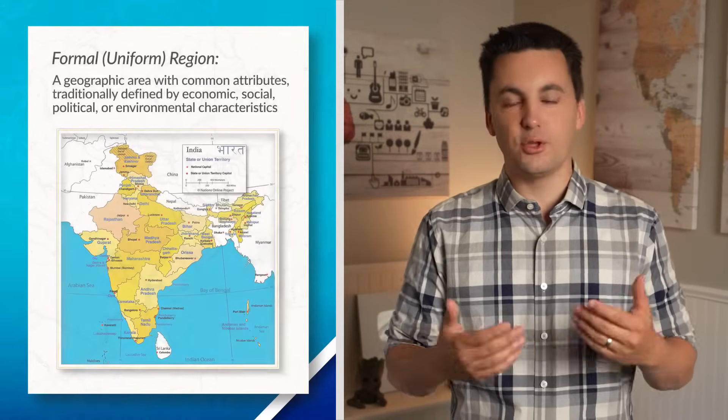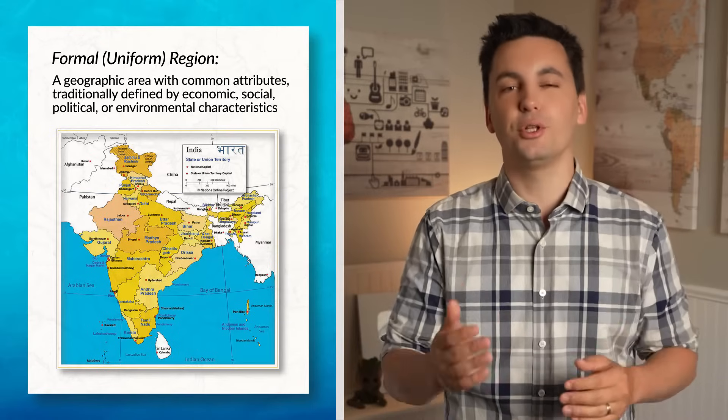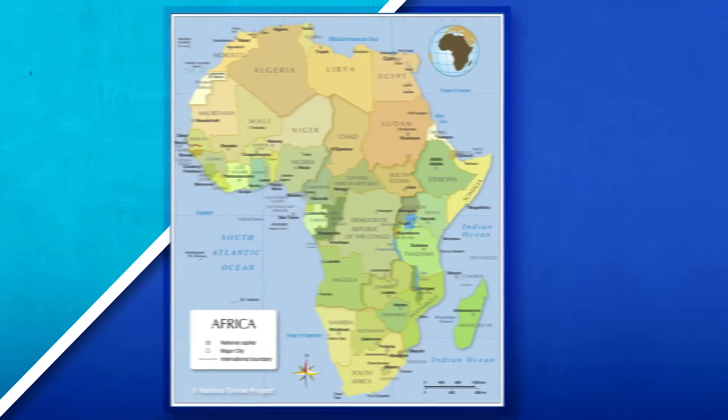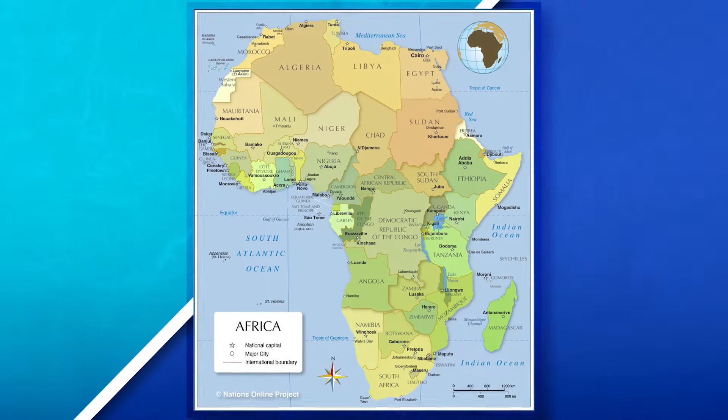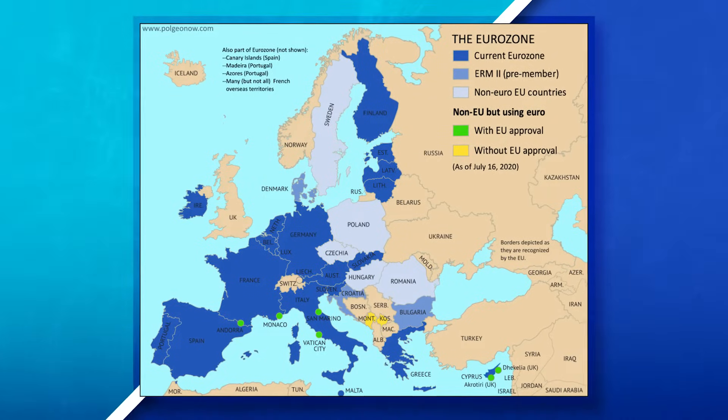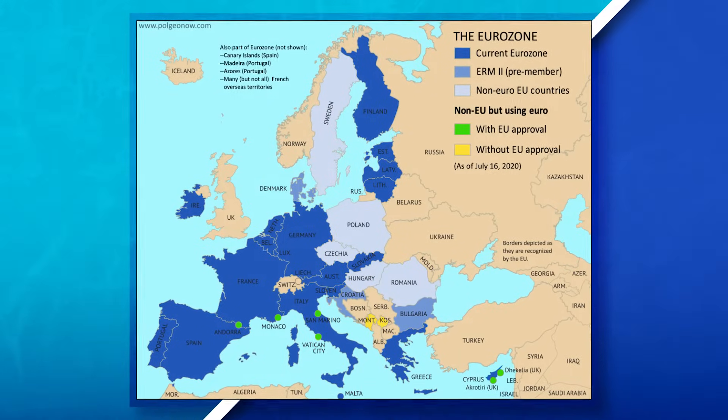A formal region is a geographic area with common attributes, traditionally defined by economic, political, social, or environmental characteristics. Formal regions are not up for debate — they are often homogenous, with pretty set boundaries and clearly visible common characteristics, making them normally easy to identify. For example, the Himalayas are a physical formal region where the mountain range location is not up for debate. The political states of Africa have set political boundaries, and the Eurozone is an economic region with a common currency and similar economic policies.